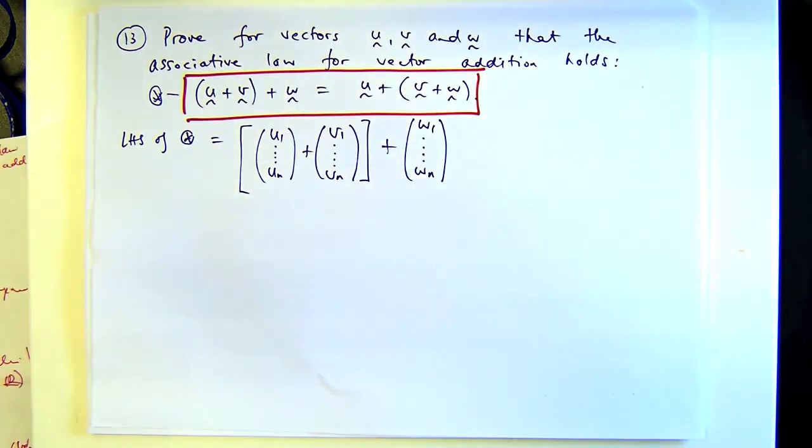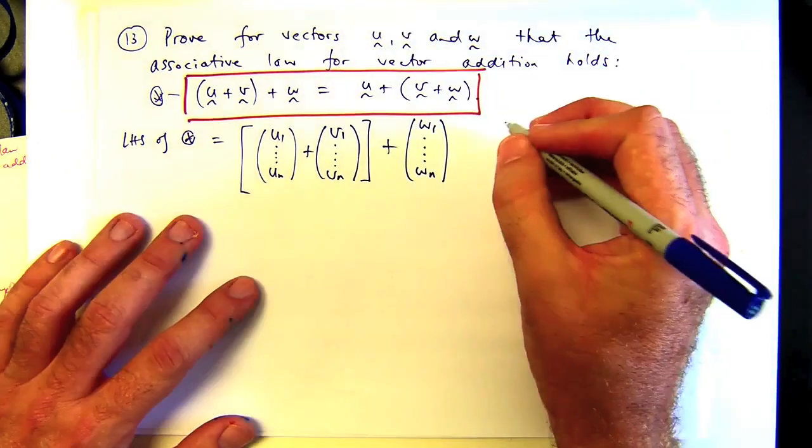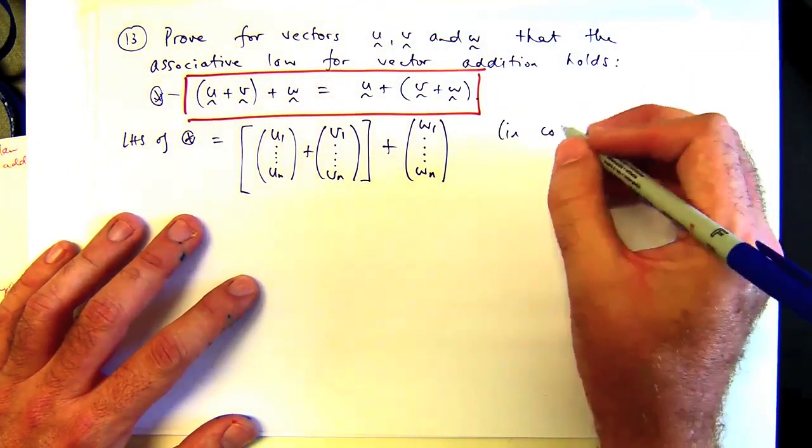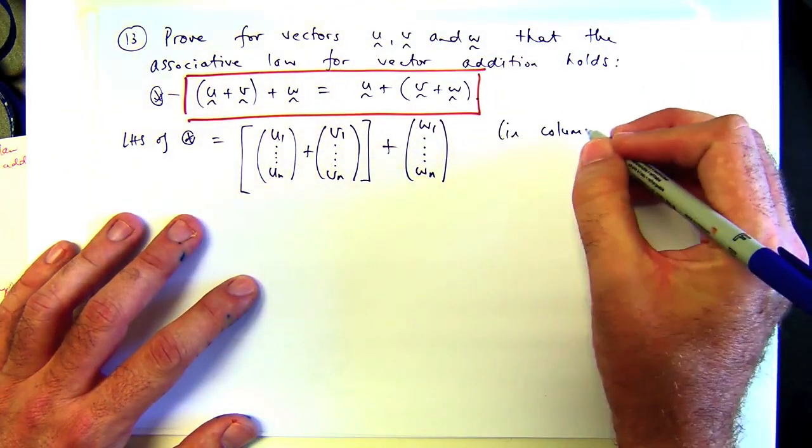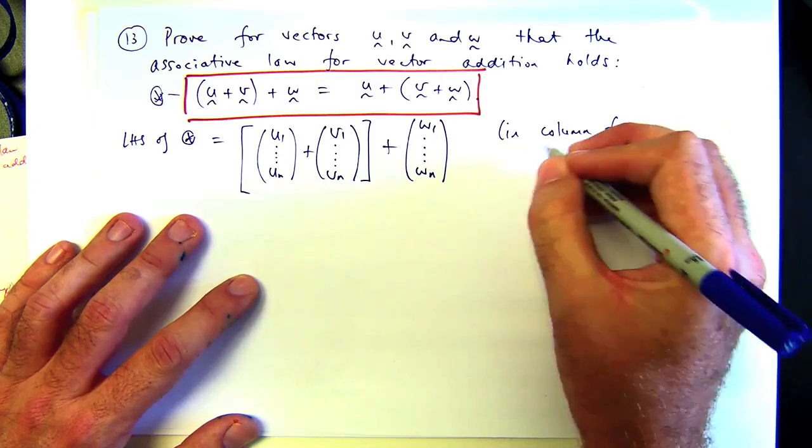There I've written them out in column form, and the u sub 1s, u sub 2, u sub 3, they're all real numbers. And how do we define addition between two column vectors? You just add the corresponding components together, right, which are all real numbers. So we know the basic laws from real numbers. So this is like in column form, with components.